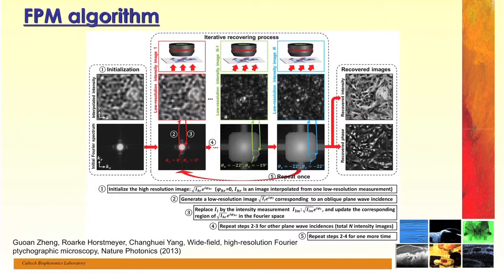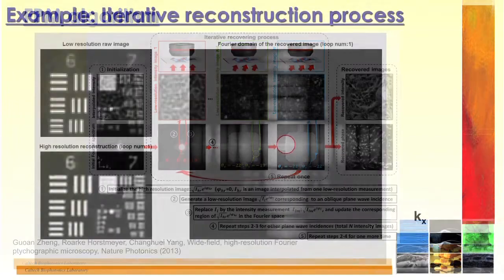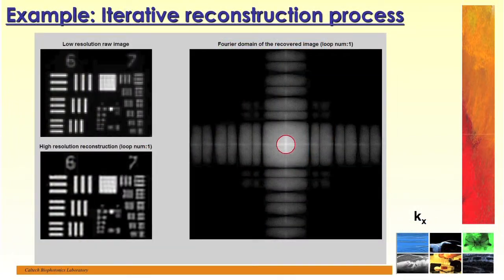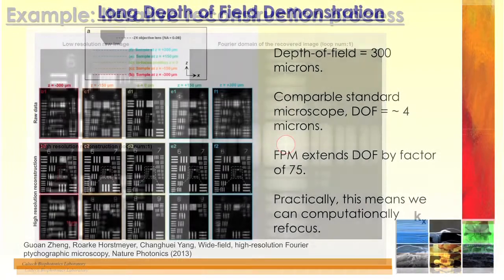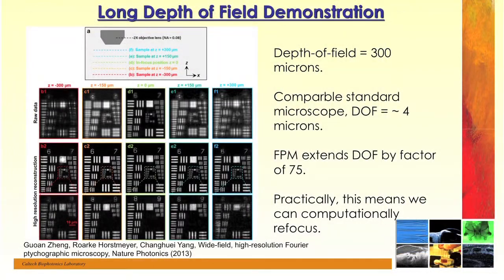After we have collected the data, we can do post-processing to refocus the samples until we get a sharp focus image. It's a technique that doesn't require much sophistication in terms of the optical microscope itself, and it lends itself very well for making very cost-effective autonomous digital pathology machines.